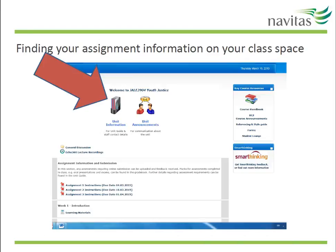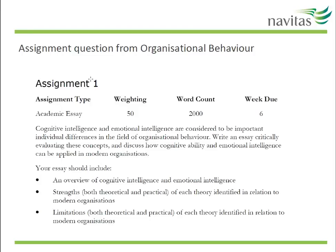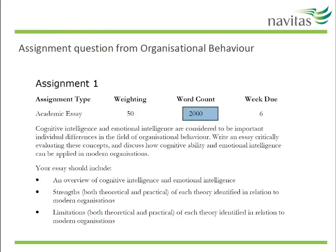You'll need to know where your assignment information is. When you look at your class space, this is where you will find assignment information and the questions. Note the important information about how much the assignment is weighted — in this case, worth 50% of your marks in the unit. Note also that the word count is 2000. Somewhere near here, or on the next page, you'll find the marking criteria, which contains vital information about how to complete the assignment.